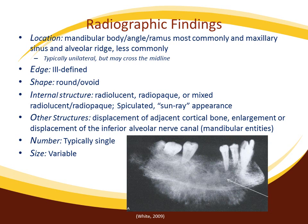Osteosarcoma is typically ill-defined or with diffuse borders, and is typically seen as a round ovoid structure. The internal structure can appear radiolucent, radiopaque, or mixed radiolucent/radiopaque. The area may also present radiographically with a speculated sunray appearance due to deposition of bone radiating out from the cortex, which can be seen in the radiograph on this slide. Osteosarcoma is exclusively a singular lesion, and varies greatly in size.